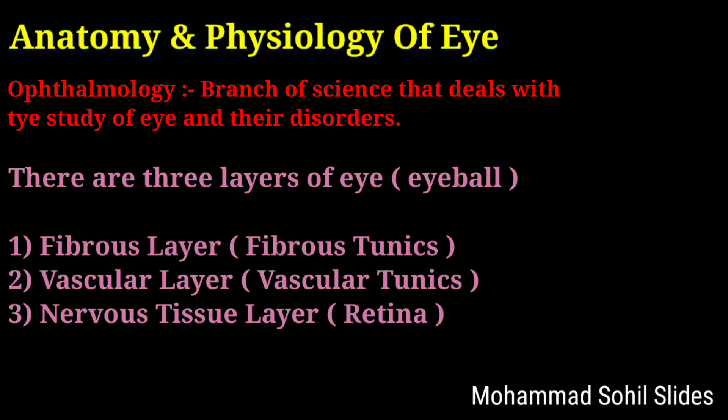Ophthalmology is the branch of science that deals with the study of the eye and its disorders. Basically there are three layers of the eye, which is also called the eyeball. The first layer is the fibrous layer, also called fibrous tunica. The second is the vascular layer, and the third is the nervous tissue layer, or retina.